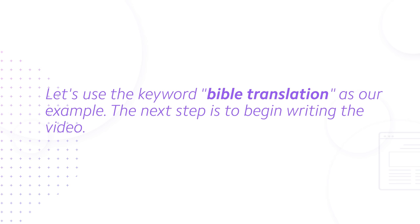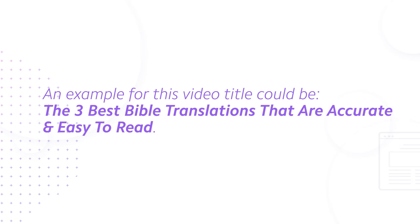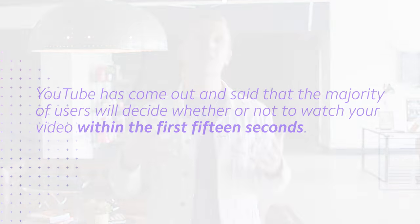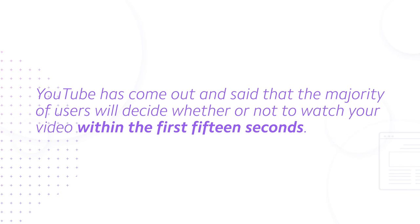Let's use the keyword 'Bible translation' as our example. The next step is to begin writing the video, so let's start with the title. The most important thing is to make sure you include your keyword in the title of your video, and the earlier you place it in the title, the better. An example title could be 'The Three Best Bible Translations That Are Accurate and Easy to Read.' Next comes your video's intro. YouTube has said that the majority of users will decide whether or not to watch your video within the first 15 seconds.